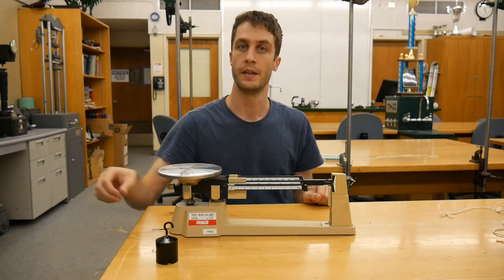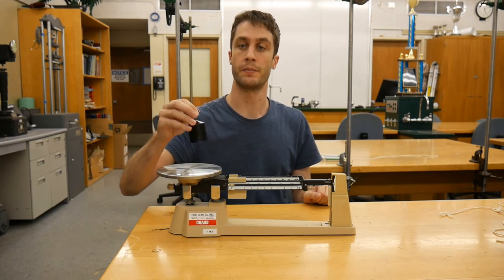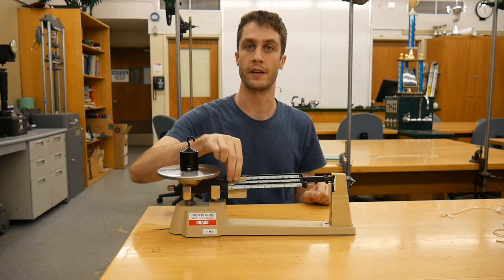As with the first part of the experiment, use the triple beam balance to replace the 500 gram nominal value with an exact value.